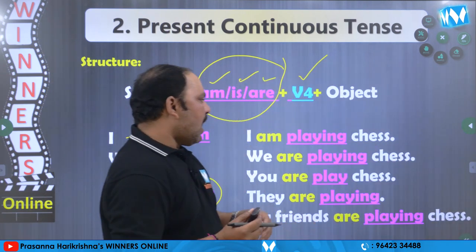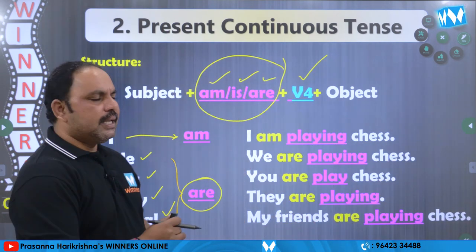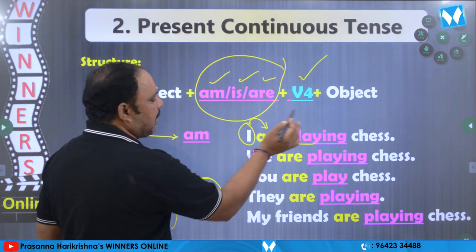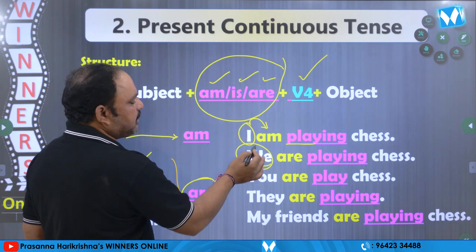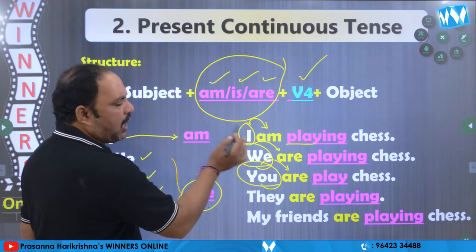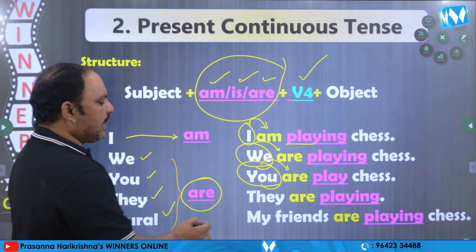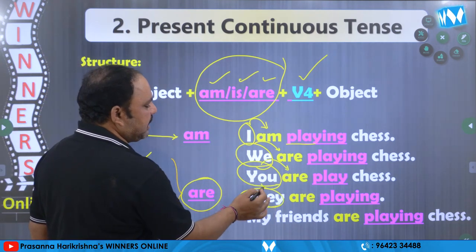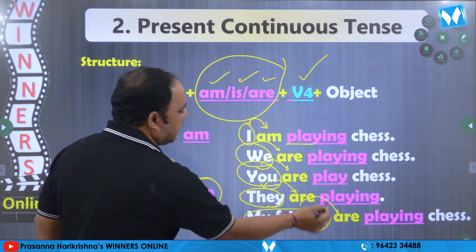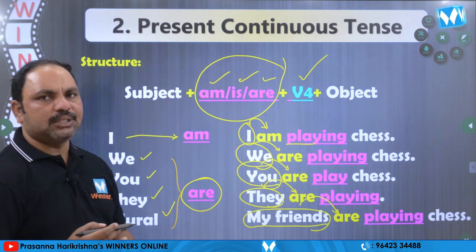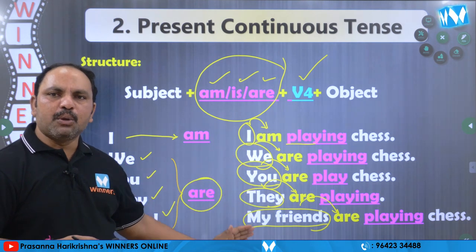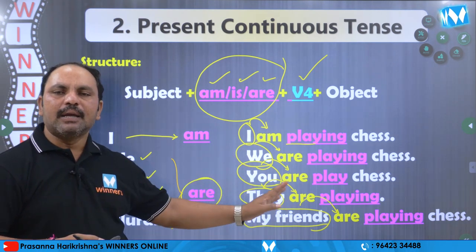Udaharanakki: I am playing chess. Ikkada am undikabatti, I undikabatti am raasyamu. Tharavata playing. 'We' ane subject ochina apadu: We are playing chess. 'You' ane subject ochina apadu: You are playing chess. 'They' ane subject ochina apadu: They are playing chess. My friends — bahuvachanam lo plural subject kawatti — My friends are playing chess.